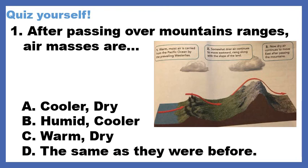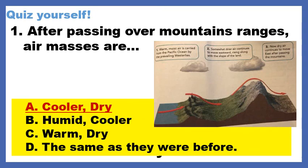Before I go any further, please note there is a picture with your question — that always means you should use the picture to answer. If you can't read it well, it's on textbook page 389. I'm going to eliminate D — they're not going to stay the same as before. I'm also eliminating B because as you go from the ocean towards the land you lose moisture, so you won't be as humid. The correct answer is A: cooler and drier.